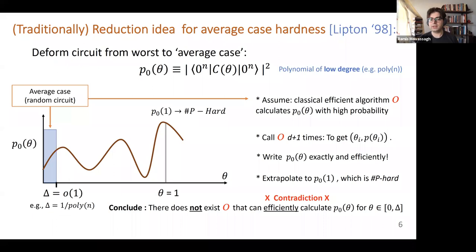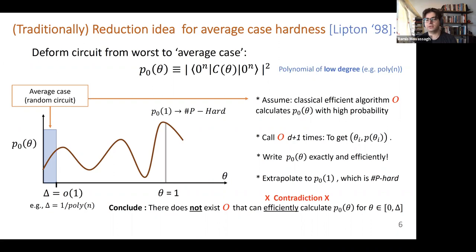If all these steps were efficient, there is no way I could have solved a #P-hard problem efficiently unless P equals #P. But we don't believe P equals #P—we don't even believe P equals NP, and #P is larger than NP. So that's a contradiction, assuming complexity theory holds—that the polynomial hierarchy doesn't collapse.